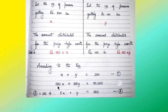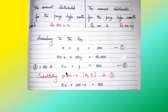In this equation, 500 divided by 100 is 5, and 100 divided by 100 is 1, so 1y is just y, and 50,000 divided by 100 is 500. So the simplified equation is 5x plus y equals 500. Now, equation 1 can be rewritten as y equals 200 minus x, since when x goes to the right-hand side it becomes 200 minus x.